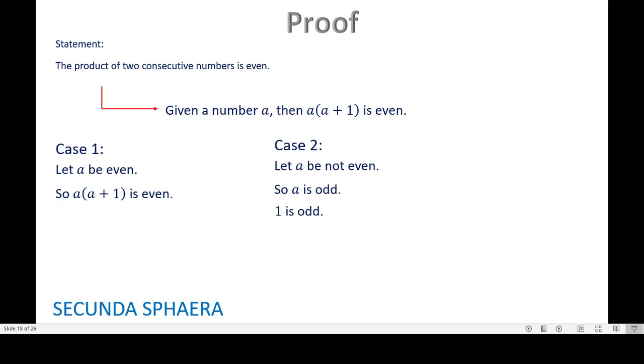Also, it is common knowledge that one is odd. So a plus one, this is the addition of two odd numbers, and you can also find this in a former video. This is going to be an even number. And now the product of a times a plus one is the product of a number times an even number, and the product of that type is even. So that would be for this second case. We have done all the cases.